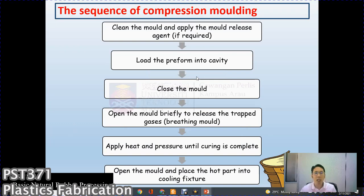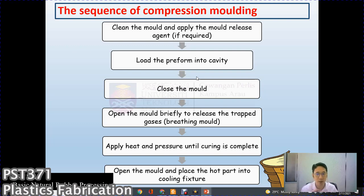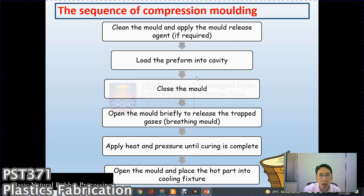Sequence of compression molding: first, clear the mold and apply mold release agent if required, as some materials will stick to the cavity. Remove any debris or leftover material. Load the preform into the cavity. Close the mold, then open it briefly to release any trapped gas — this is a very important step. Apply heat and pressure until curing is complete. For thermoplastic material, allow it to flow. Open the mold and place the hot part into a cooling fixture.